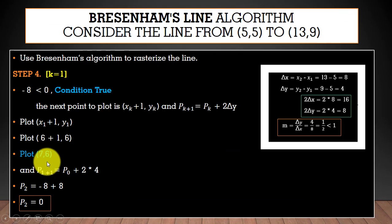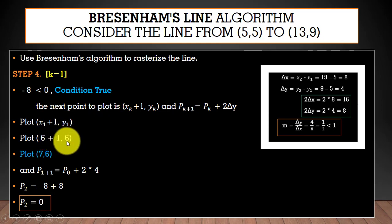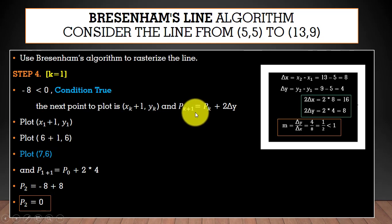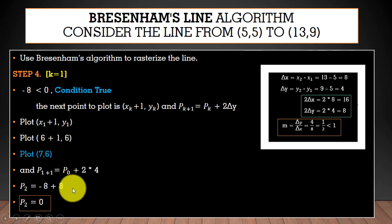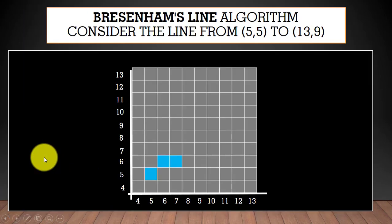The previous point was (6,6), so x = 6 + 1 = 7 and y remains 6. The new point we plot is (7,6). Now for p₂, we put k = 1 and p₁ = −8 (note: not 0 as written — please use −8). So −8 + 2Δy = −8 + 8 = 0. We got p₂ = 0 and plotted another point on screen: (7,6).